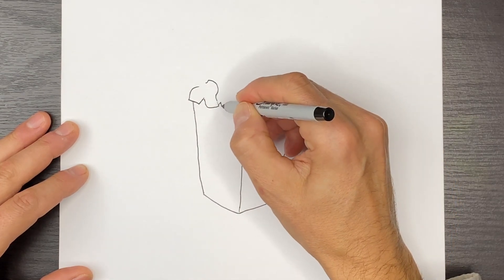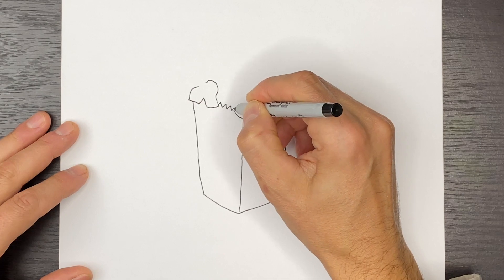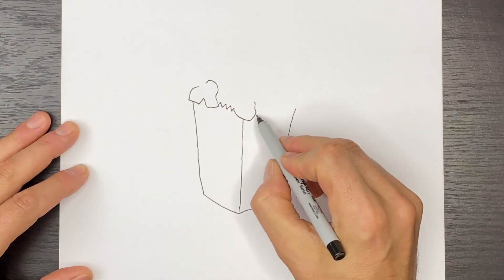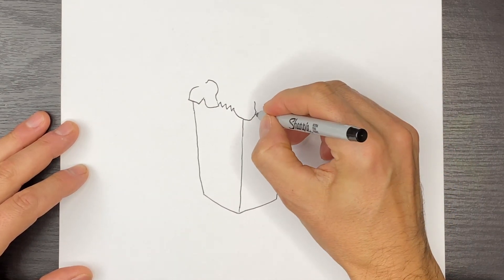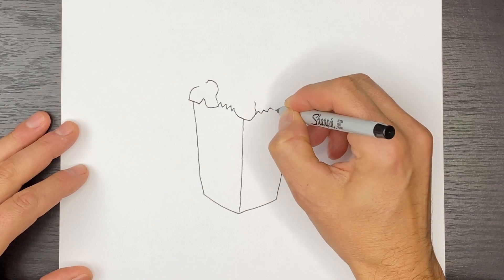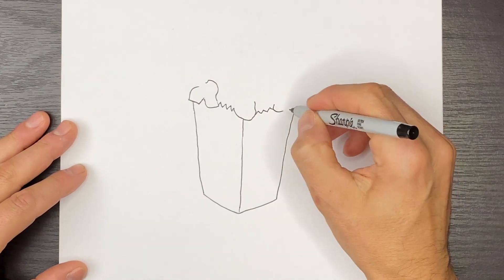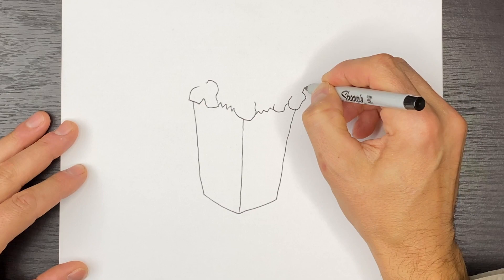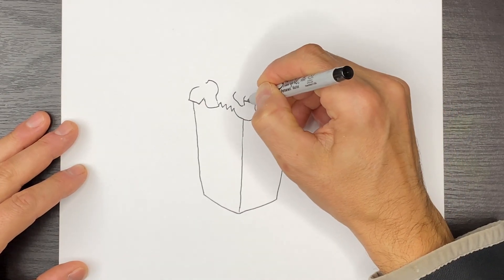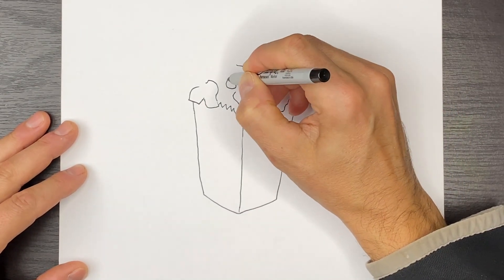And then we're going to see the edge of the box right here. So I'm going to draw some zigzags in this way. This is the top of our box. And then we'll draw some more popcorn shapes. These can be random shapes.